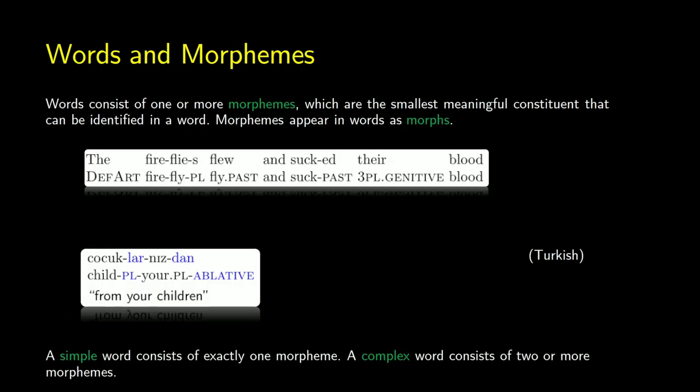We usually study what's called the morpheme. A morpheme in a language is going to be the smallest constituent that can be identified in a word that has meaning. For instance, past is an example of a morpheme — it has a meaning, it means past tense. Another morpheme could be 'dog', referring to the animal. In language, each of these meanings, each of these morphemes, are going to appear as a morph.